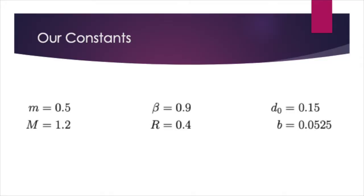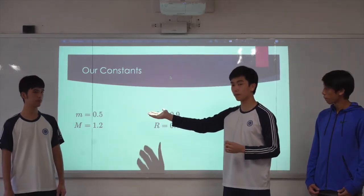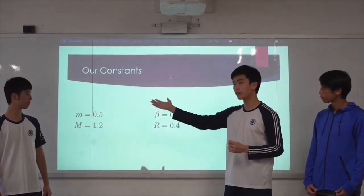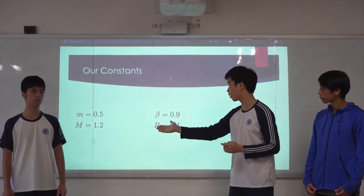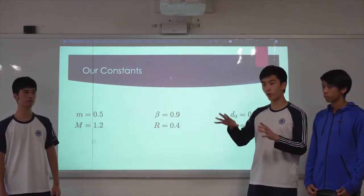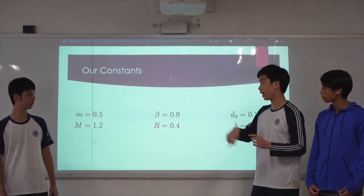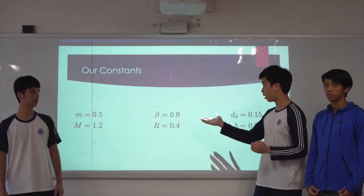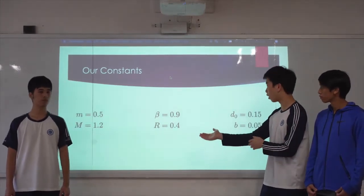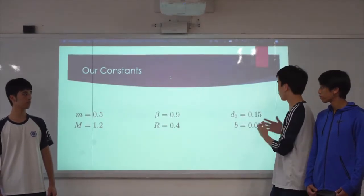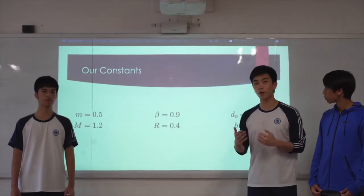After we've designed this proof for the optimal trajectory, we defined our constants to be used in the numerical approach. We defined the small mass of the bird as 0.5 kilograms, the big mass as 1.2 kilograms, and beta as 0.9 since most of the mass is concentrated on the wheel on the outside, and 0.4 meters for r because that's a usual value for a bike wheel.